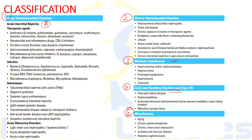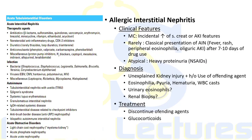Acute tubular interstitial disorders are further classified into acute interstitial nephritis and acute obstructive disorders. Acute interstitial nephritis can be due to therapeutic agents, infections, and autoimmune conditions. We will now discuss each of these conditions one by one.